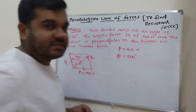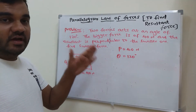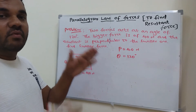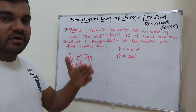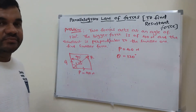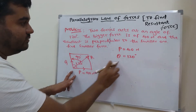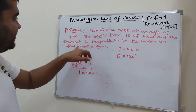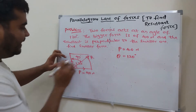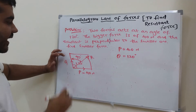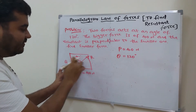In the previous video I explained the parallelogram law of forces — what is theta, what is P, what is Q, and what is alpha. You can refer to that. Theta is the angle between the two forces, that is 120 degrees. Now, the angle between the resultant force and Q is 90 degrees.